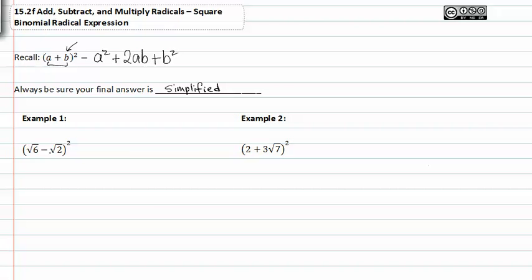In example one, we have the square root of six minus the square root of two, quantity squared, so we have two terms inside. It's a binomial raised to a second power, so it's a binomial squared.